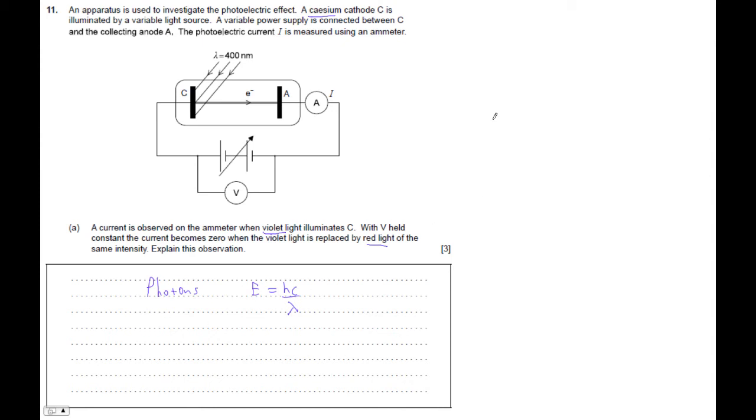Explain that the photon energy turns into the work needed to remove electrons from the metal and some kinetic energy.